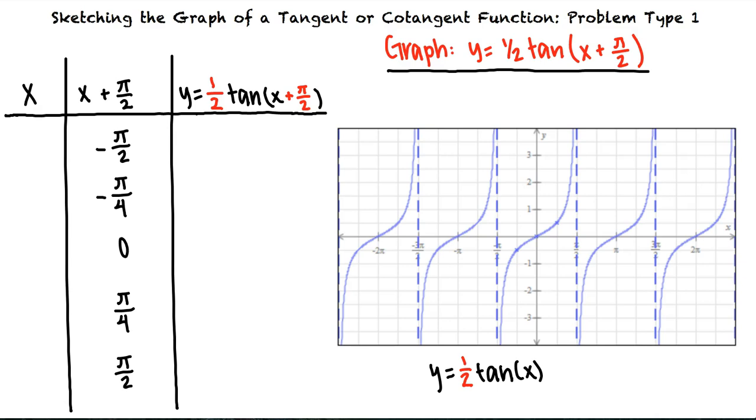This means we'll let x equal negative pi, negative three fourths pi, negative pi halves, negative pi fourths, or zero.